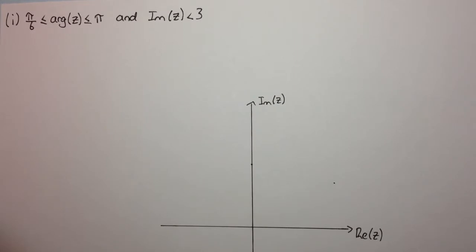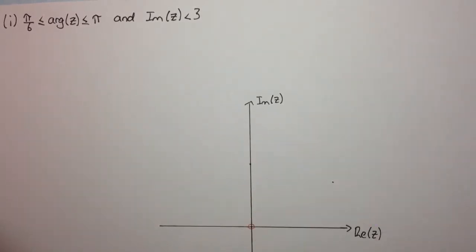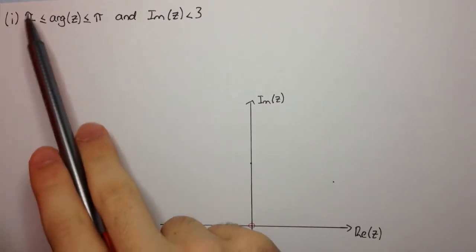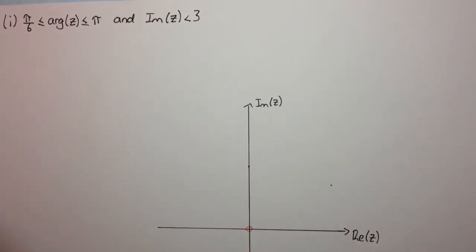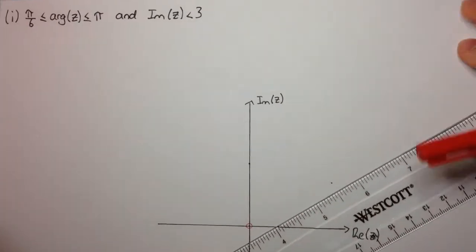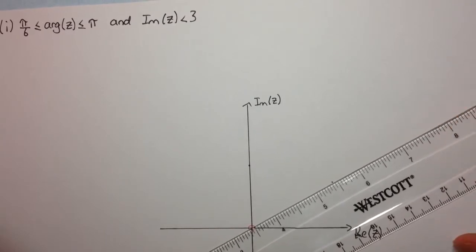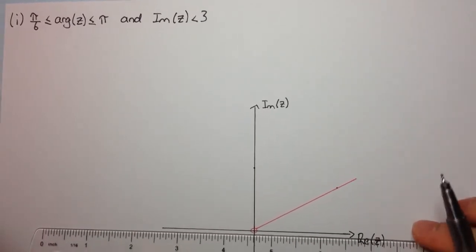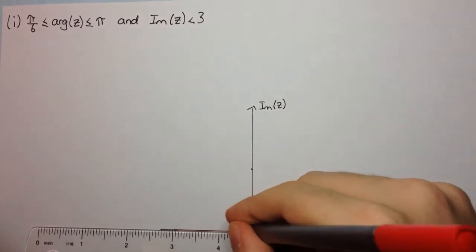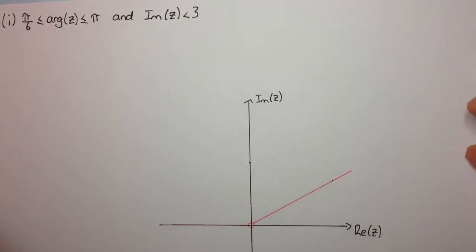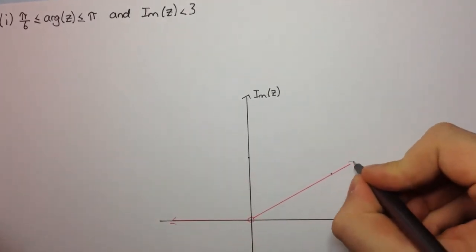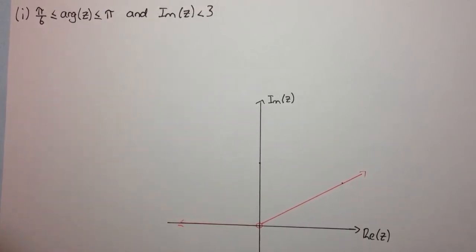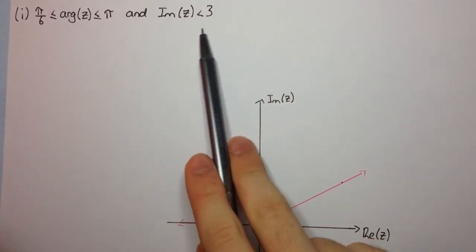The first part is a geometric type problem. It's the ray that starts at z. When we have these inequality signs, we always think of the boundary cases first — where there's equality. So if this angle equals π/6, this is what it will be, and also equal to π — when it's equal to π it's exactly the negative real axis. We want arg(z) to be in between these two points, so this is simply this area in here. I'm not going to shade this straight away because I want to find the intersection with the other set of points.